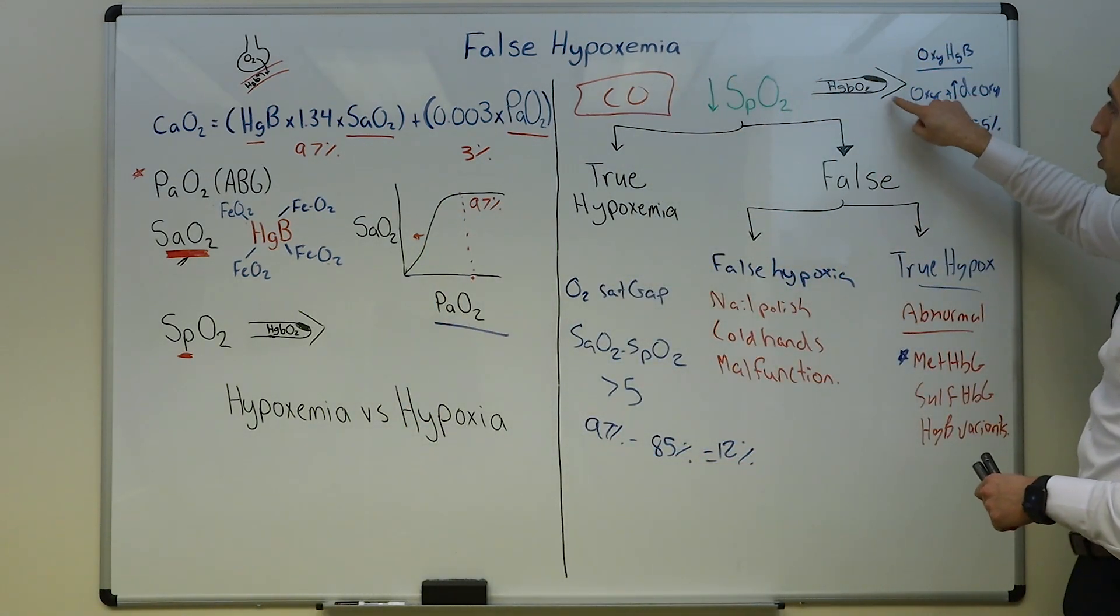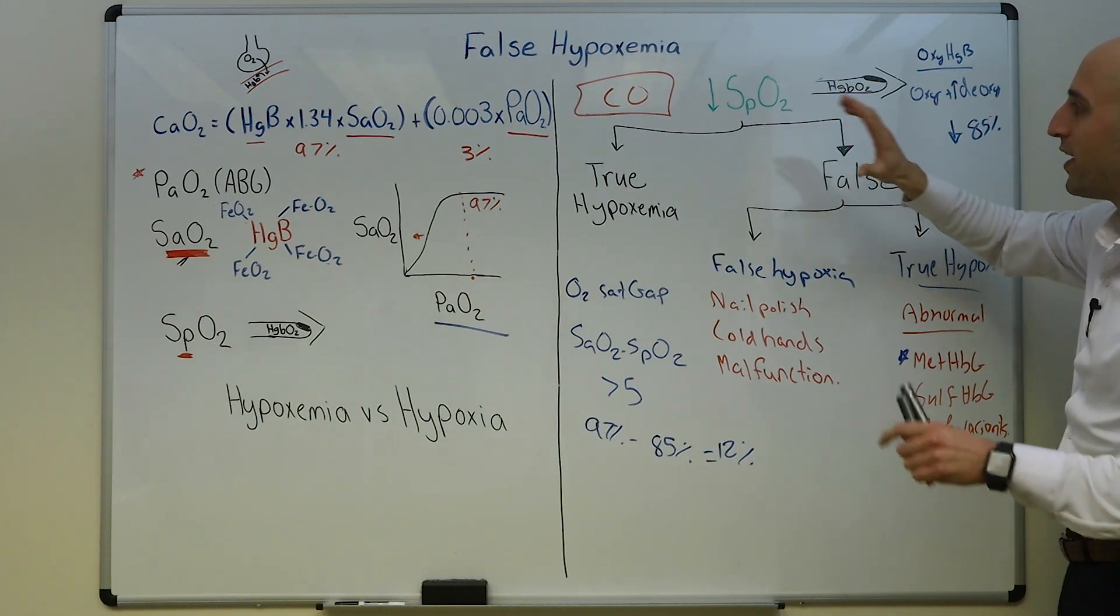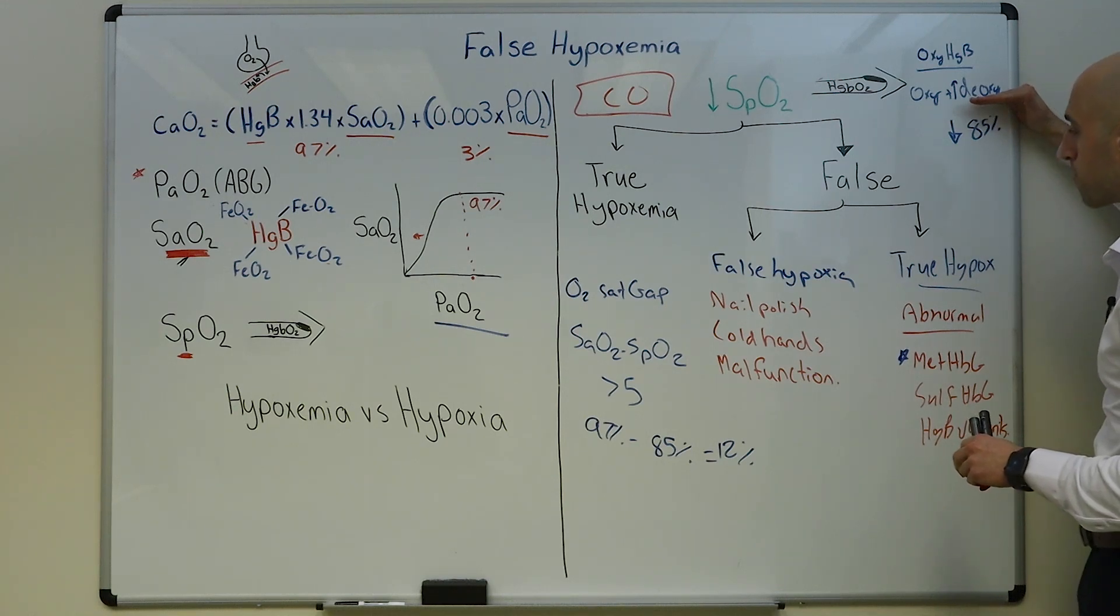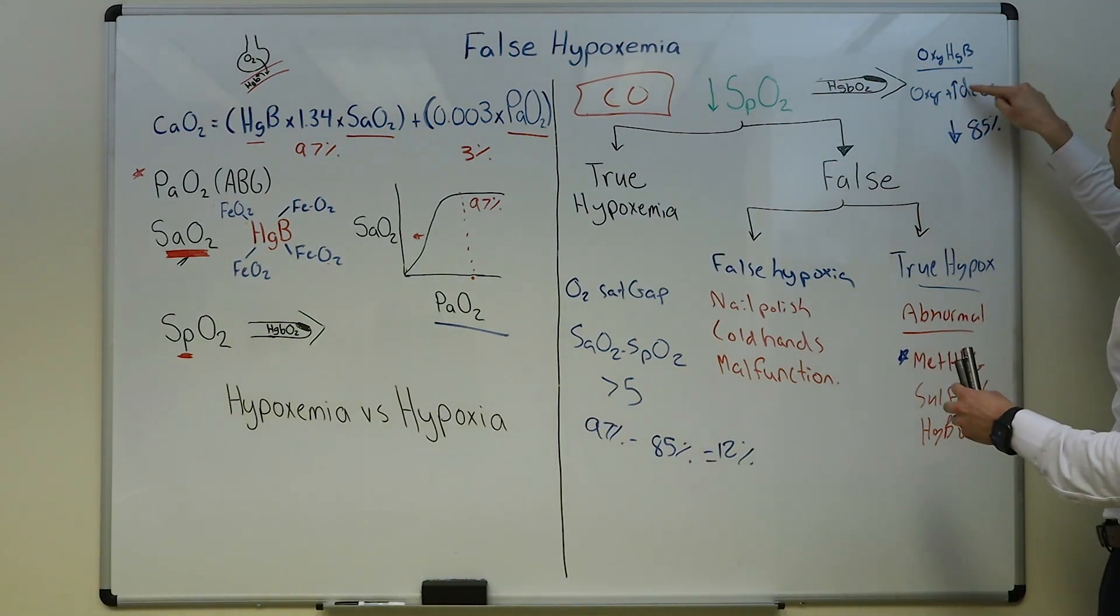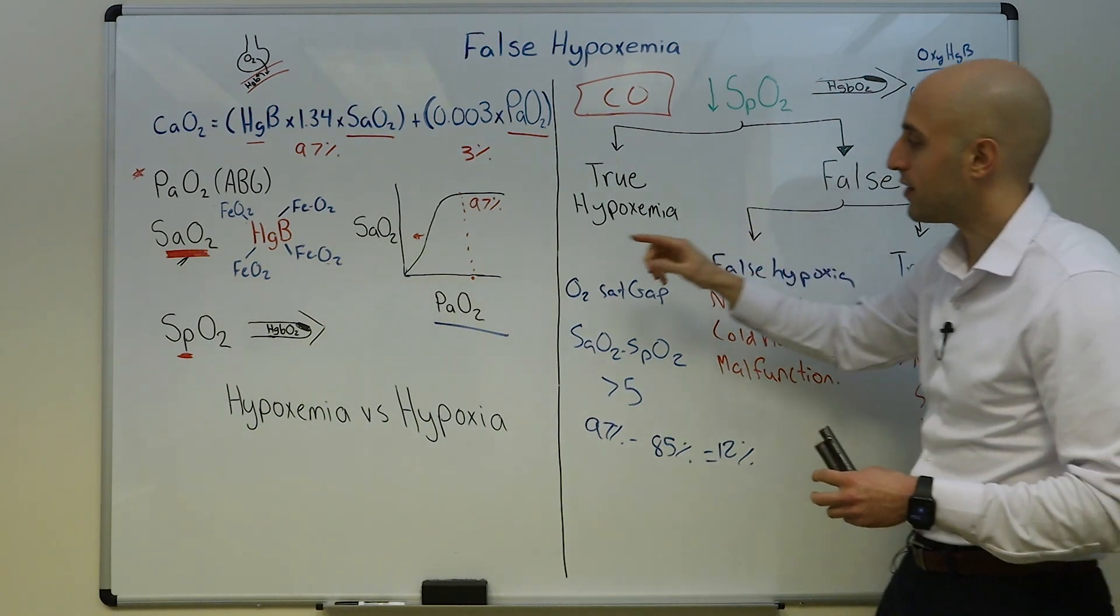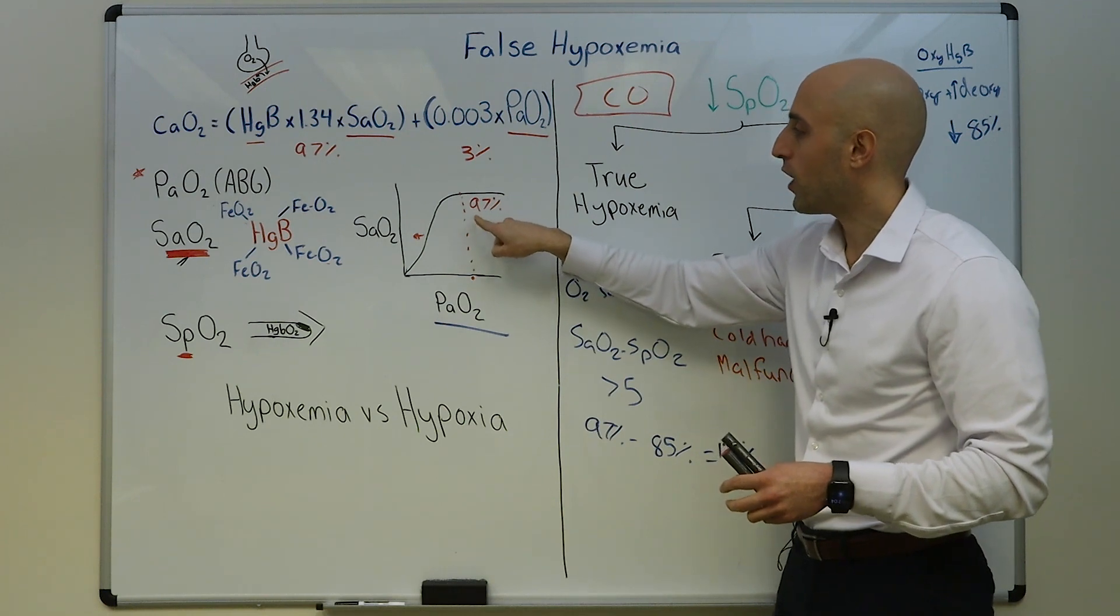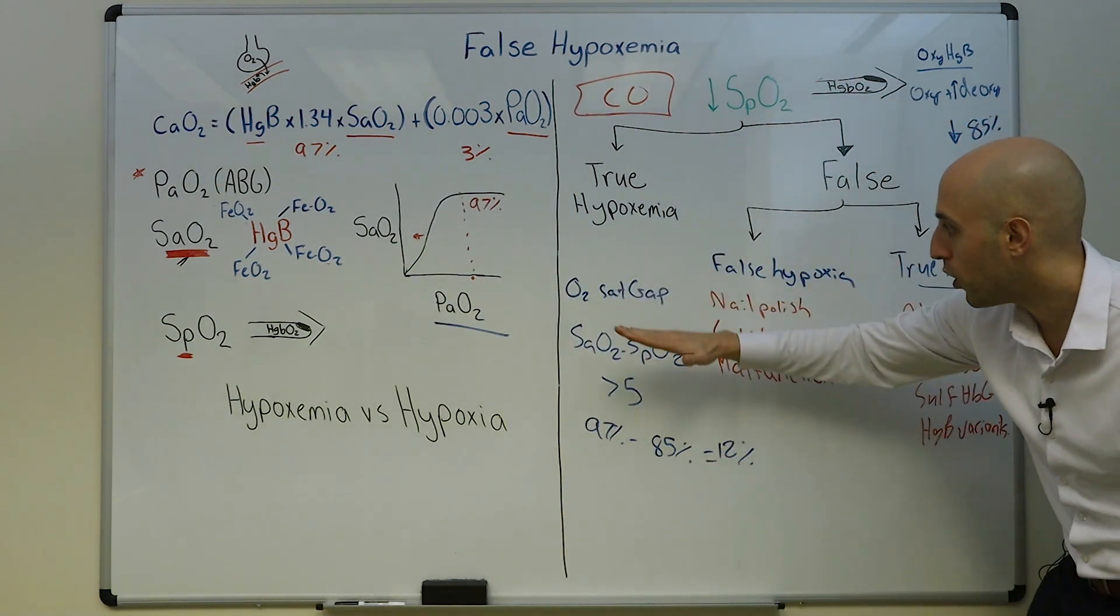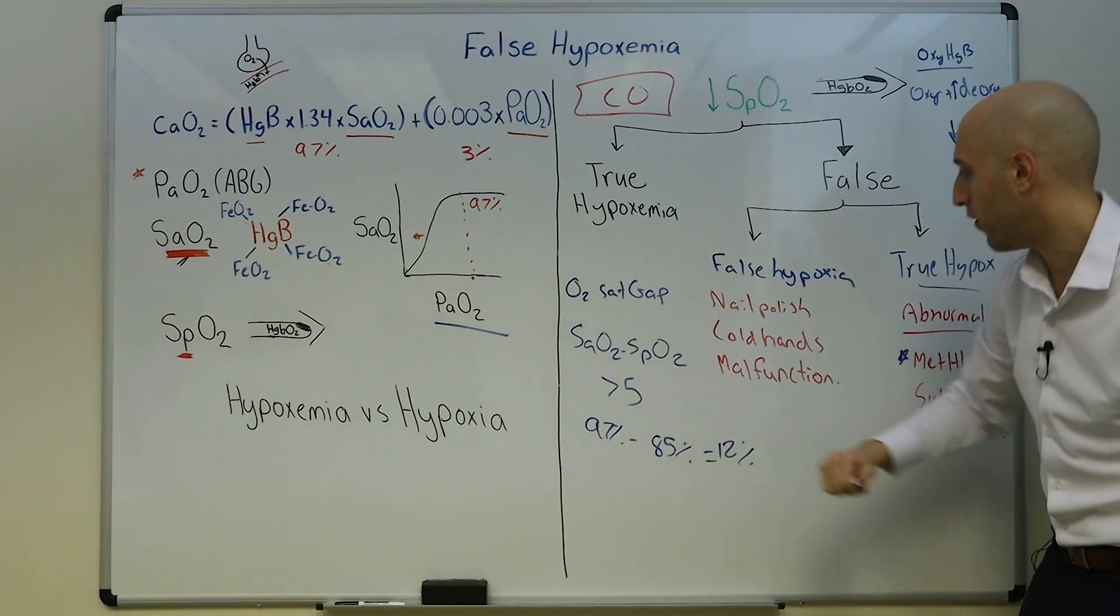The pulse ox measures the SpO2 based on two wavelengths and it can only distinguish oxyhemoglobin from deoxyhemoglobin. Methemoglobin is picked up as deoxyhemoglobin, giving a low SpO2. But because it doesn't affect the PaO2, you get a normal O2 sat on the arterial blood gas, giving you an oxygen saturation gap of greater than five.